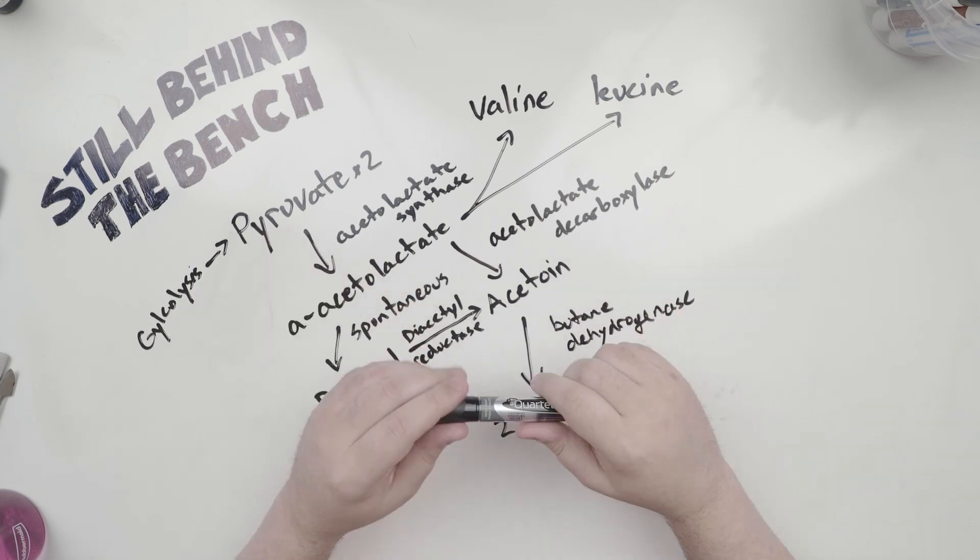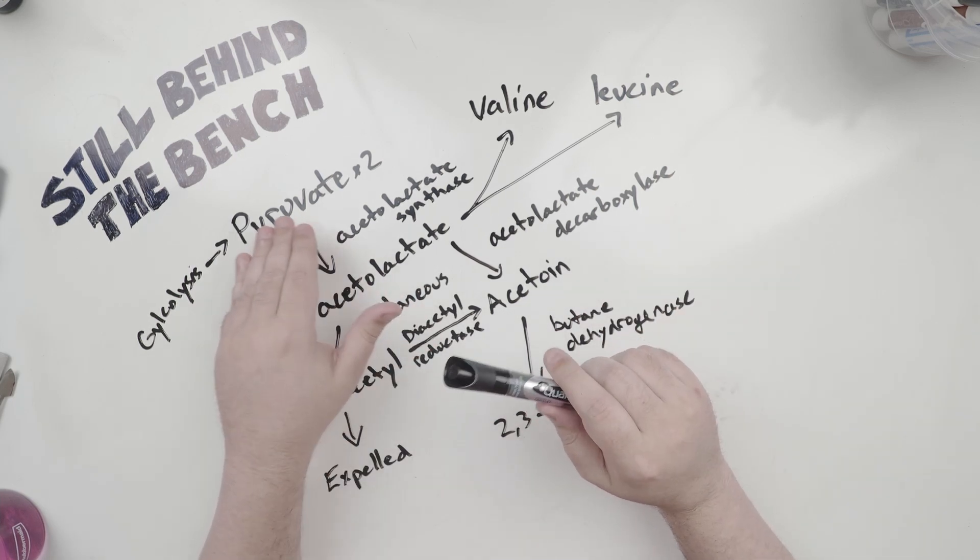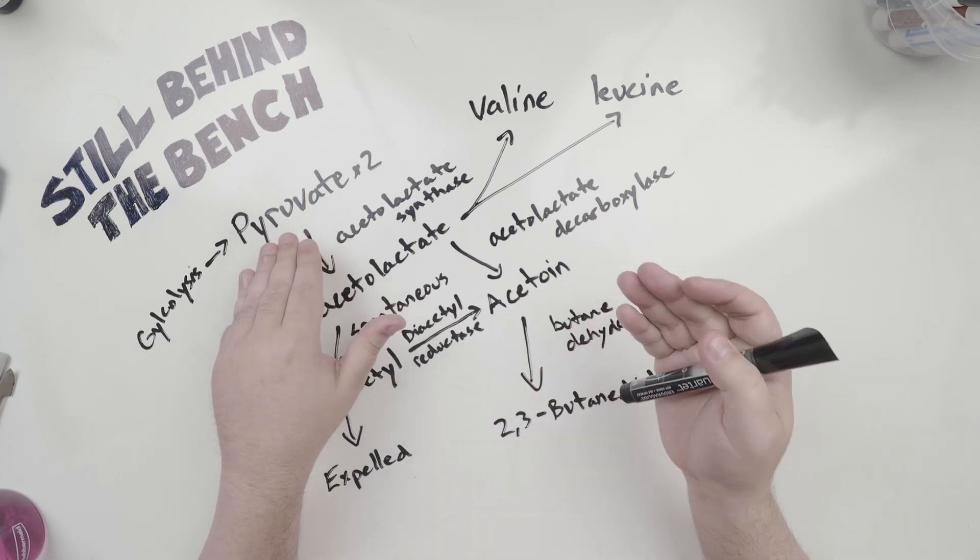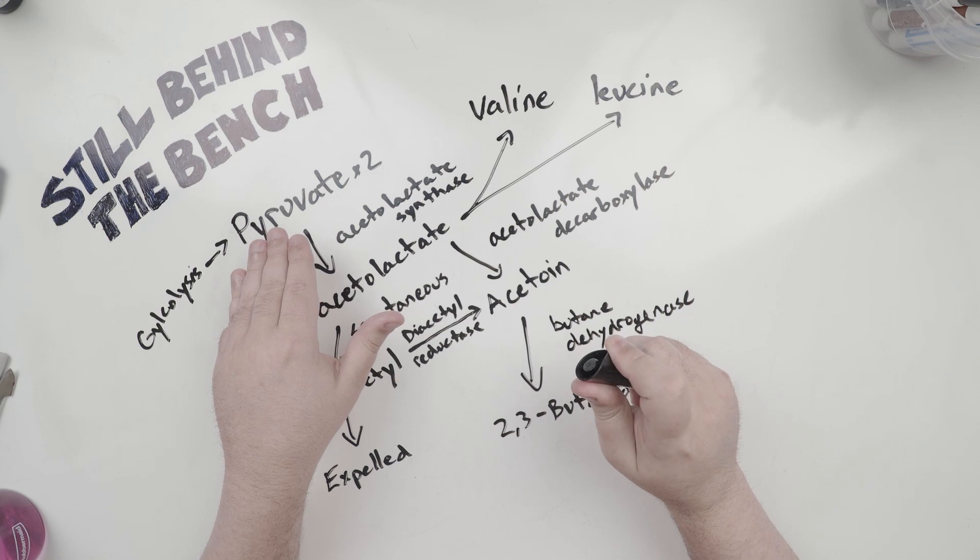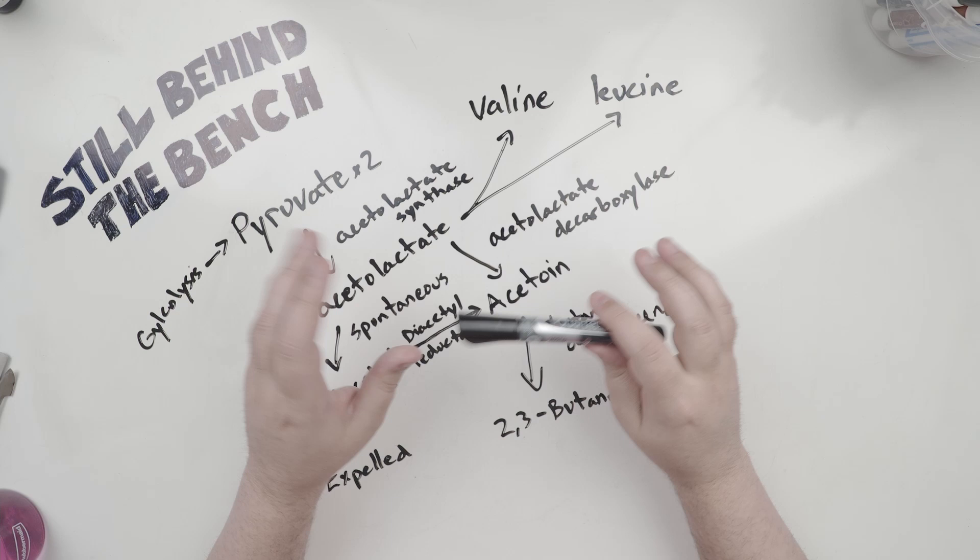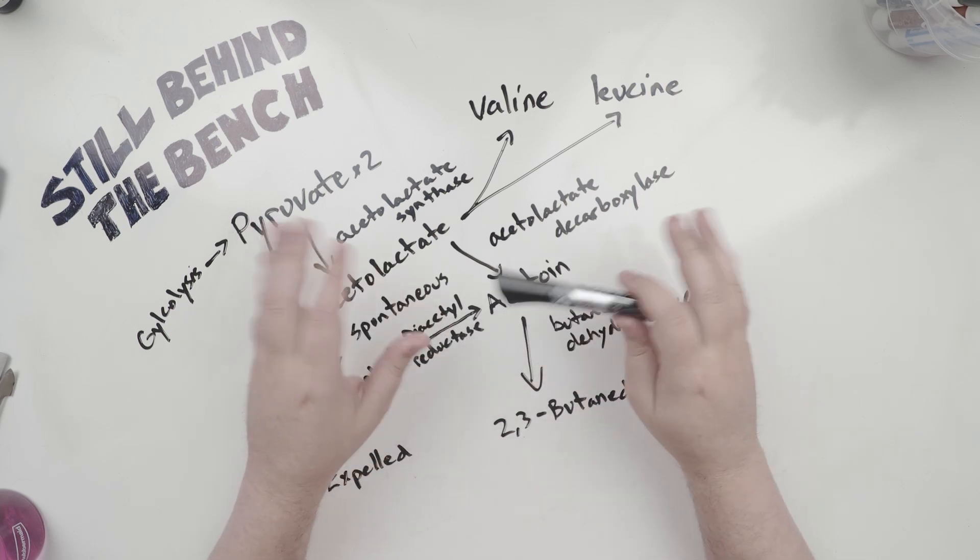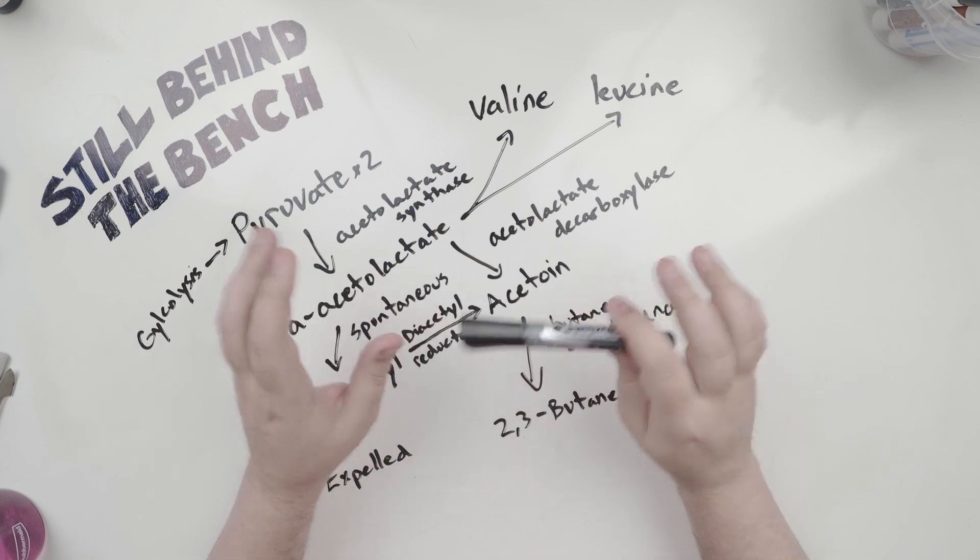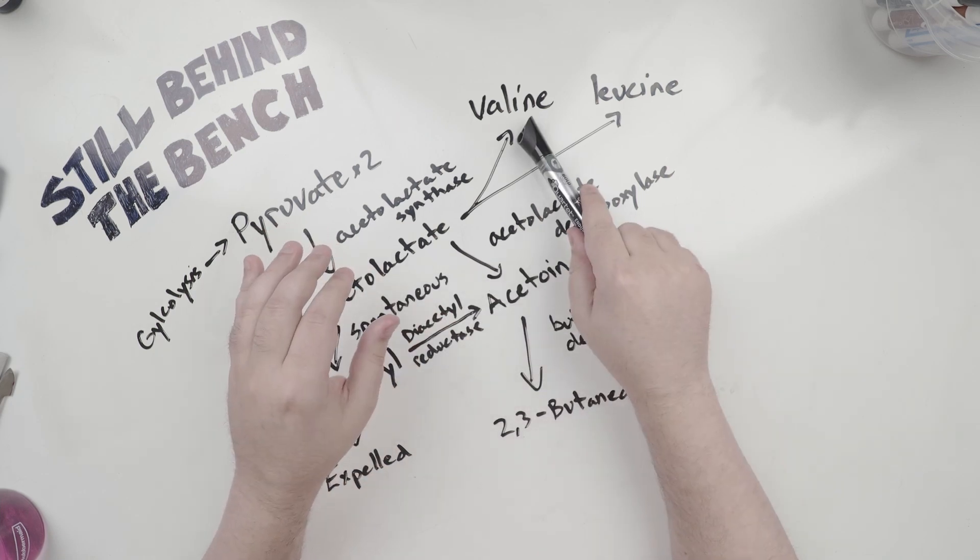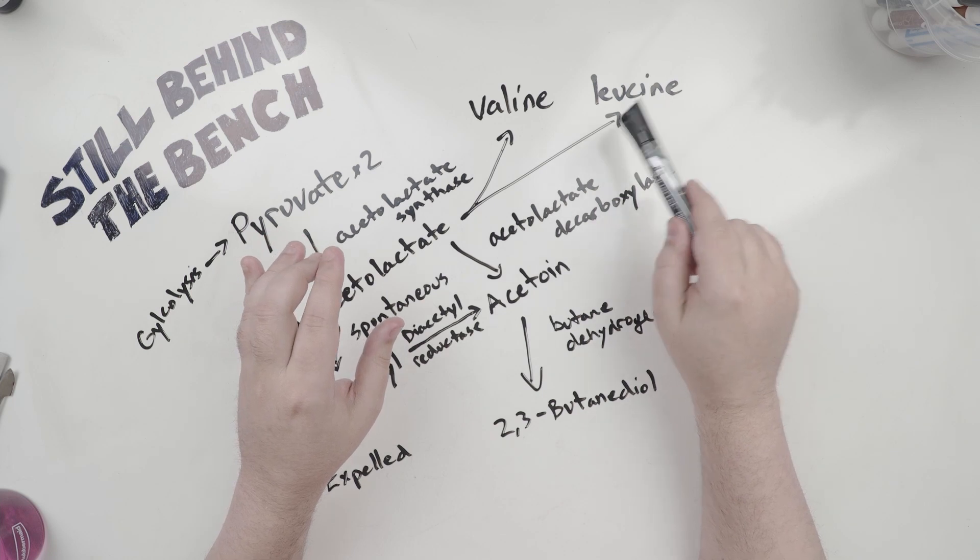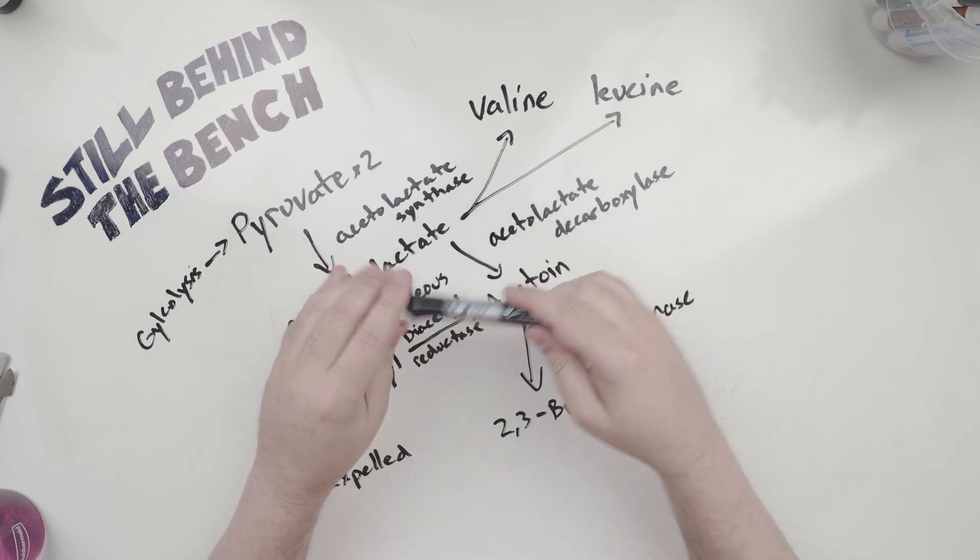And you end up with pyruvate. Under anaerobic conditions, that pyruvate normally gets turned into ethanol. And then under aerobic conditions, it gets used up in the Krebs cycle, aka the citric acid cycle. However, pyruvate is used in three other metabolic pathways, or I should say at least three other metabolic pathways to make specific amino acids. But I'm only going to reference two of them, valine and leucine, because the precursor to the third one, isoleucine, isn't involved in the creation of diacetyl.